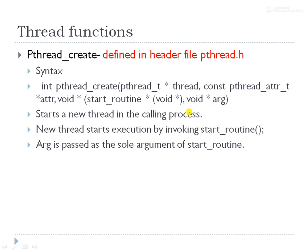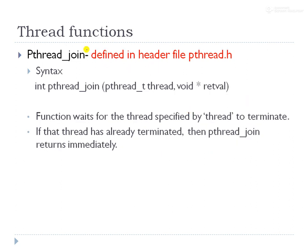There is also `pthread_join`, used to wait for a thread to terminate. Its arguments are `pthread_t thread` (the thread to join) and `void **retval` (the return value, set to NULL here). The function waits until the specified thread terminates. If it has already terminated, the function returns immediately.